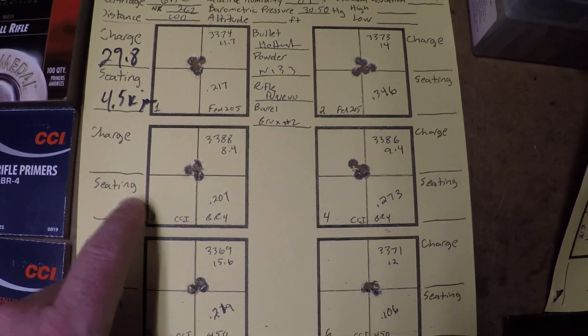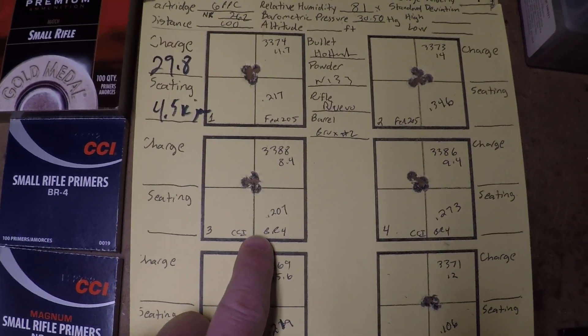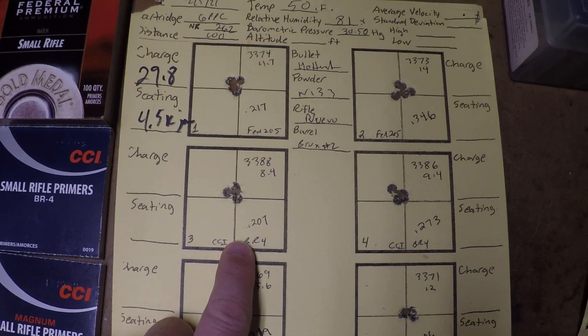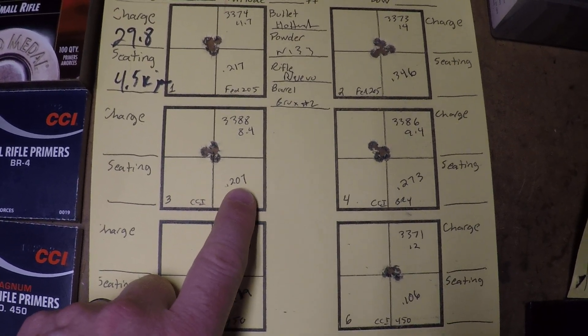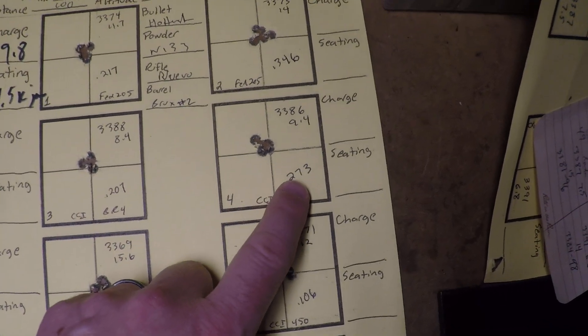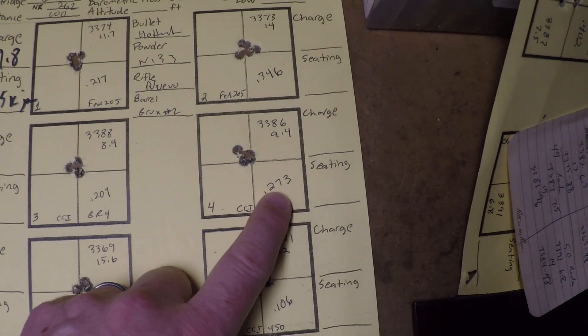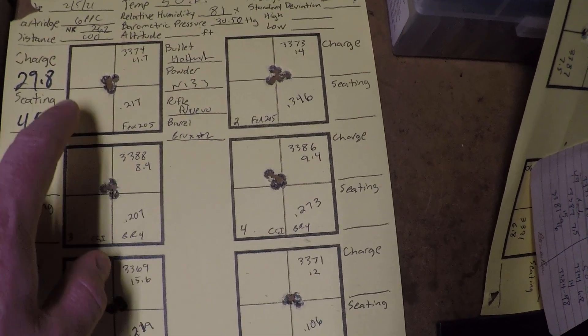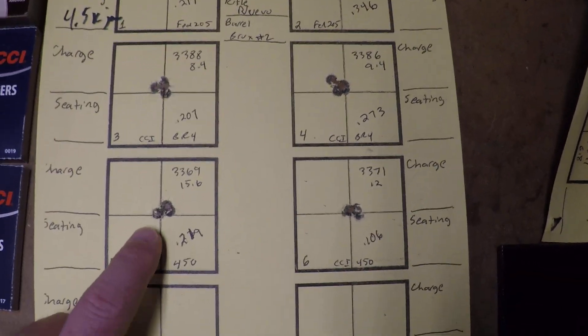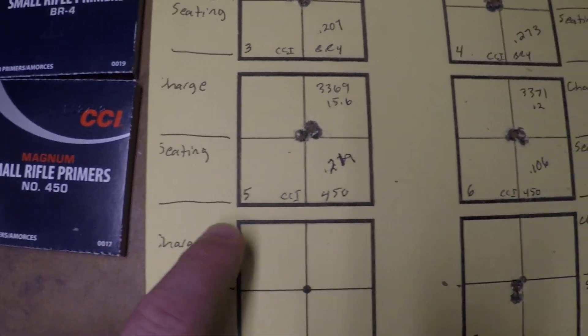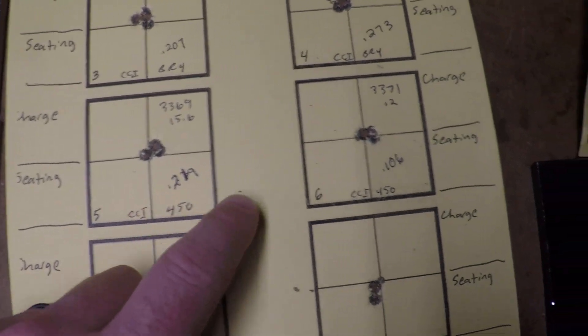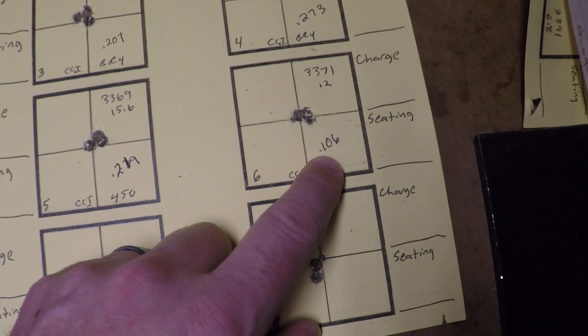Going down to CCI BR4, again, with the same exact load and the same exact seating depth, the groups were 207, 273. So, seemingly a little bit better than the 205M. And then we go down here to the CCI number 450, and we have a 2.19 and a 0.106.